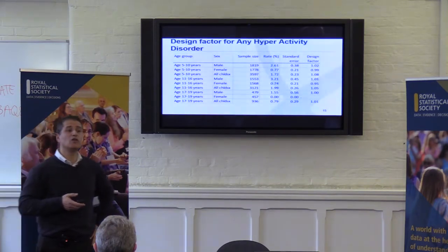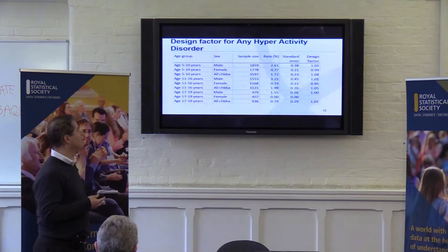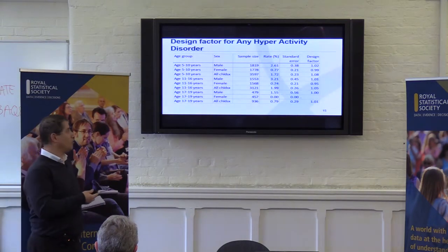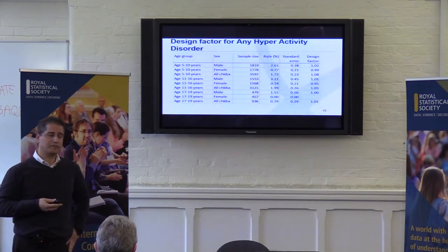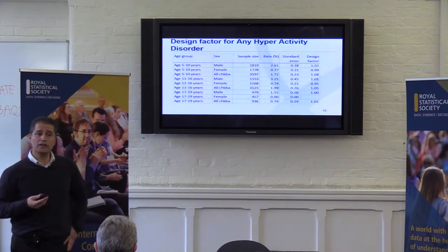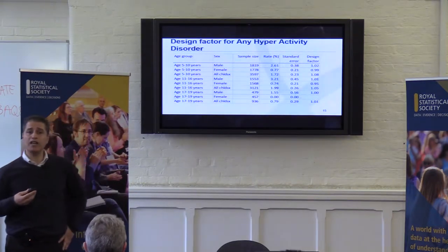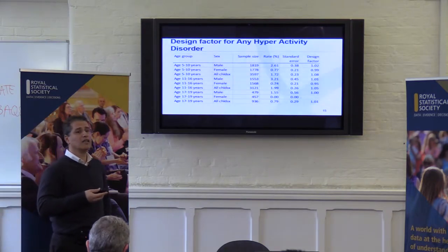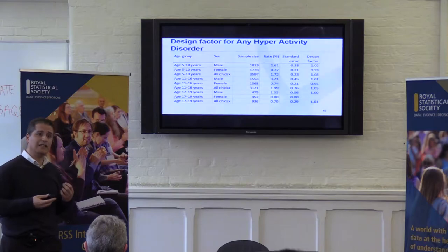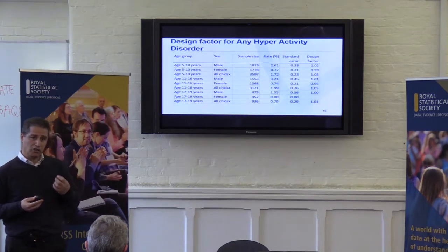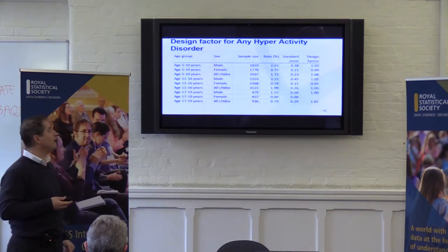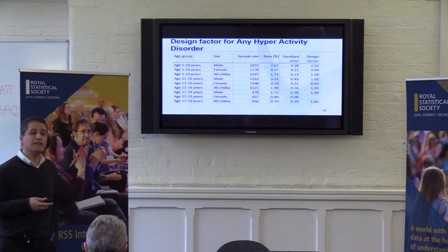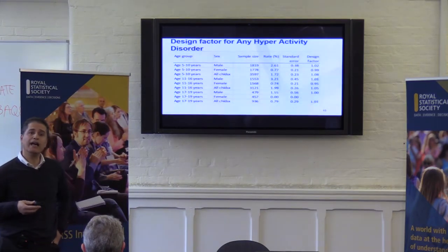One measure of the effectiveness of the design is the design effect, which compares the design we actually used against a simple random sample. Our design is clustered by postcode and it's an unequal probability sample, so there is weight variation which increases the design effect. Clustering also increases the design effect. But our sample was stratified, which tends to reduce it, and weighting to population estimates also tends to reduce it. The net effect — the design factor — shows values all very close to one, meaning there was very little loss of efficiency from using a cluster design and unequal probability sample.